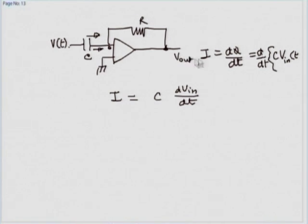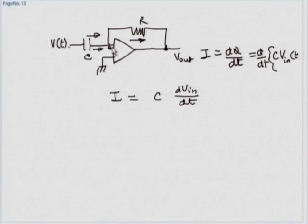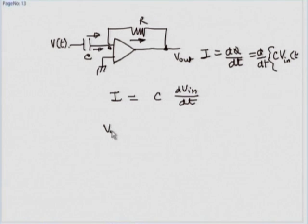What should the output voltage be? This current cannot enter the op-amp since input impedance is infinite. The only path for this current is through the resistor R. The output adjusts itself so that precisely that much current flows. To keep the virtual ground at zero, V_out must be negative, and V_out = −R × i = −RC × dV_in/dt.